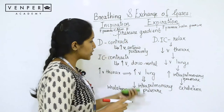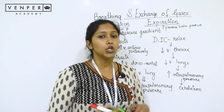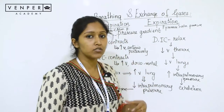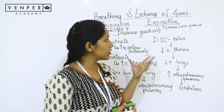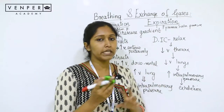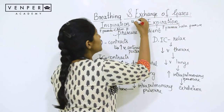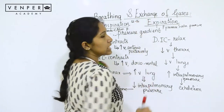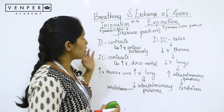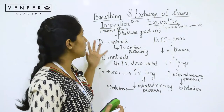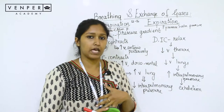In addition to this, with the help of abdominal muscles, you can increase the forcefulness of inhalation and exhalation. In a normal human, the rate of breathing is around 12 to 16 times per minute. This is the overall process of inhalation and exhalation of gases.